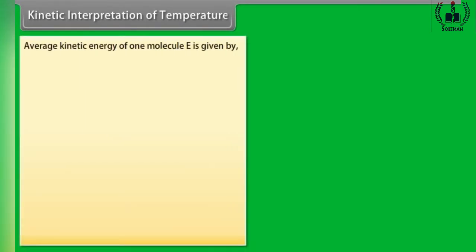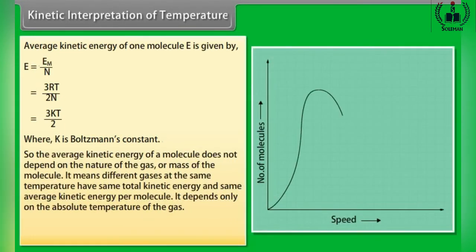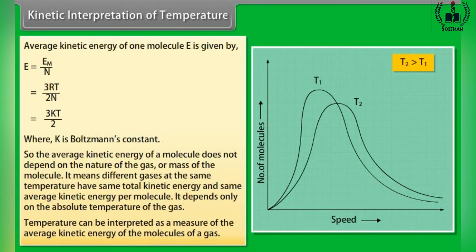Kinetic interpretation of temperature. The average kinetic energy of one molecule is given by E = E_m/N = 3RT/(2N) = (3/2)kT, where k is Boltzmann's constant. The average kinetic energy of a molecule does not depend on the nature of the gas or the mass of the molecule. It means different gases at the same temperature have the same total kinetic energy and the same average kinetic energy per molecule. It depends only on the absolute temperature of the gas. Temperature can therefore be interpreted as a measure of the average kinetic energy of the molecules of a gas.